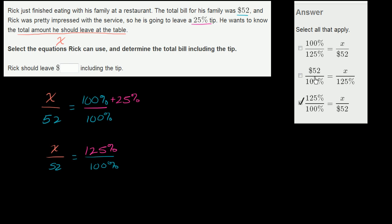Now let's see if any of these other ones make sense. So here it says the ratio of the actual bill to 100% is equal to the ratio you're going to pay at 125%. Now this makes sense too.